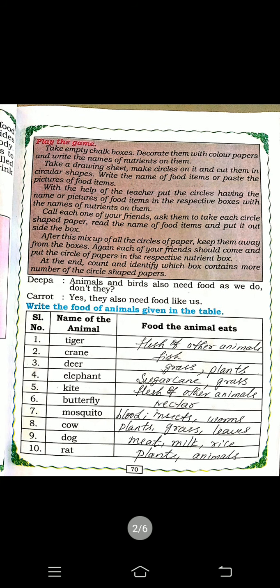There is a game activity. Take empty chalk boxes and decorate them with color papers; write the names of nutrients on them. Take a drawing sheet, make circles and cut them into circular shapes. Write the names of food items or paste pictures. With the teacher's help, put the circles in the respective nutrient boxes. Mix up all the circles, keep them away, and have each friend sort them back into the correct nutrient box. Count which box has the most circles.